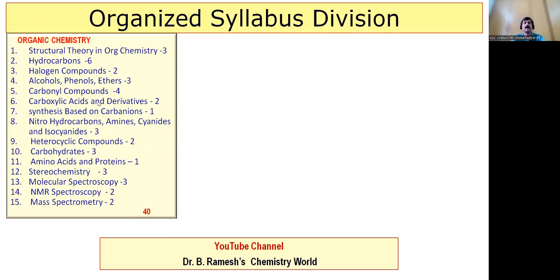Structural theory, about 3 marks, plus or minus 1 or 2 marks. Hydrocarbons, 6 marks. Halogen compounds, alcohols, phenols, ethers, carbonyl compounds, about 9 marks.